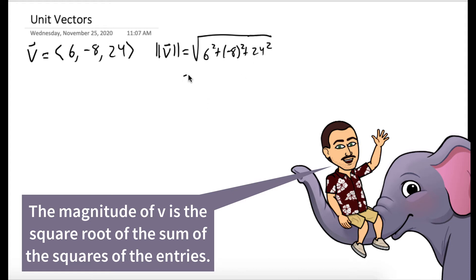It's the square root of that. So this is the square root of 36 plus 64 plus 24 squared, which is 576. Putting this all together, this is the square root of 676, which happens to be a perfect square. 26.